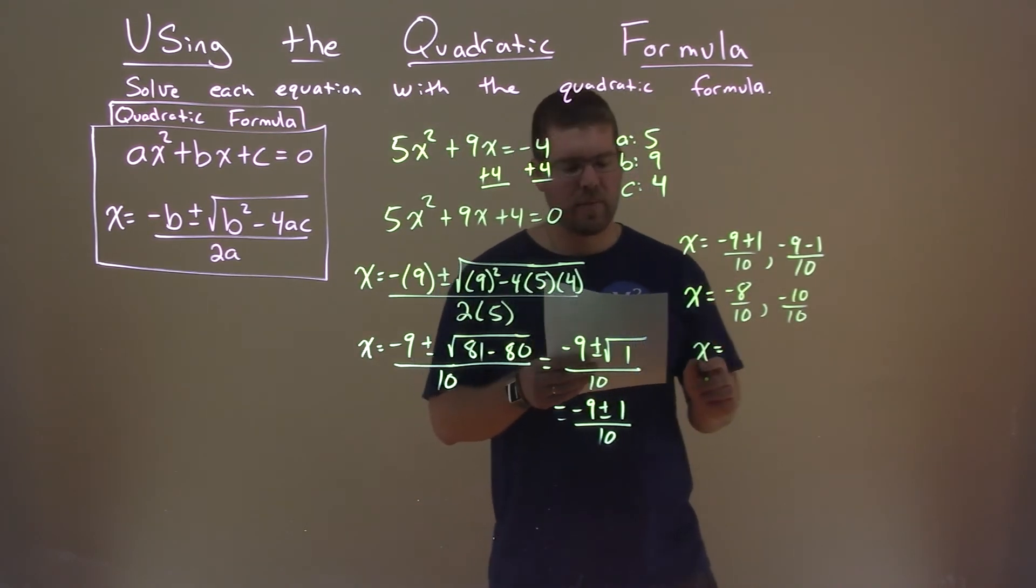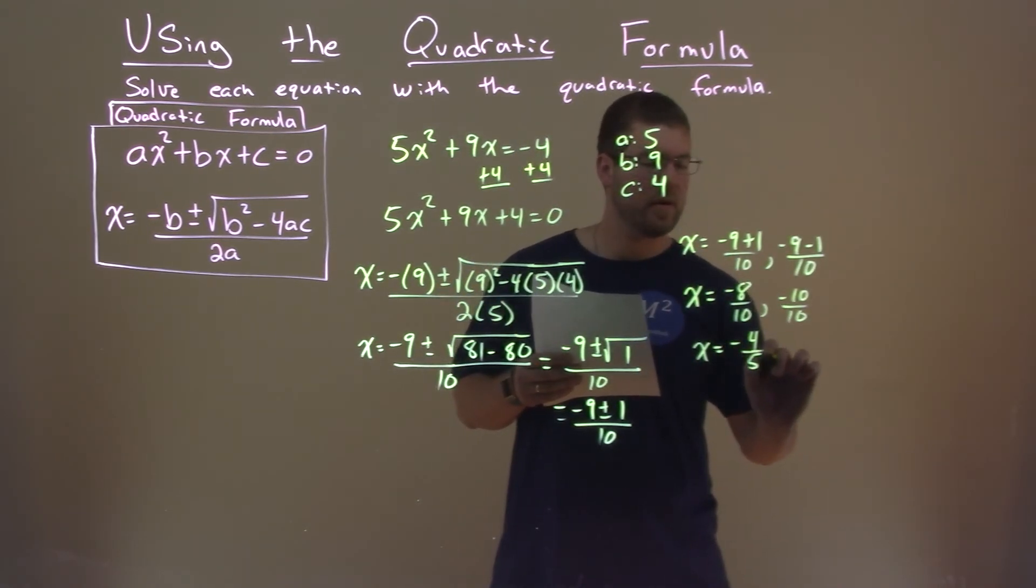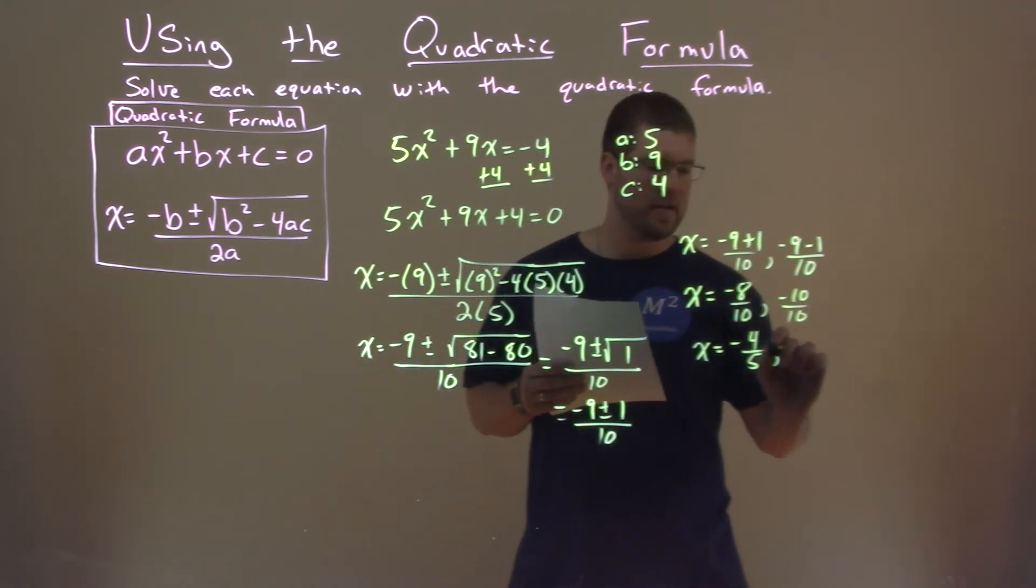Well, negative 8 divided by 10 simplifies to be negative 4 fifths. And negative 10 divided by 10 is negative 1.